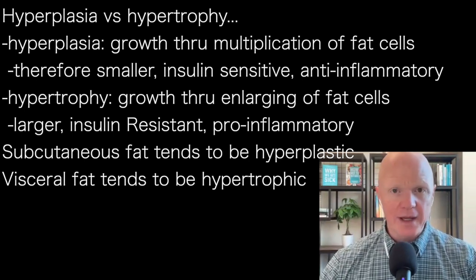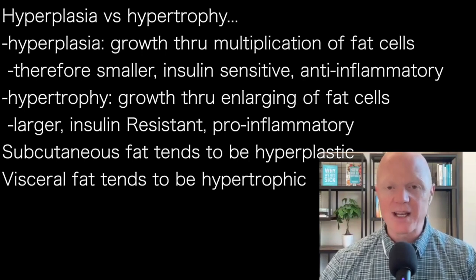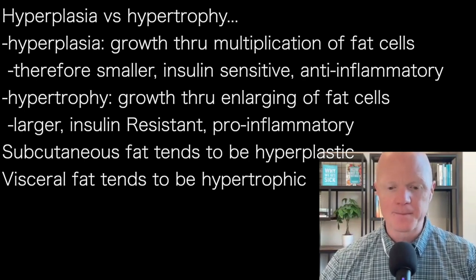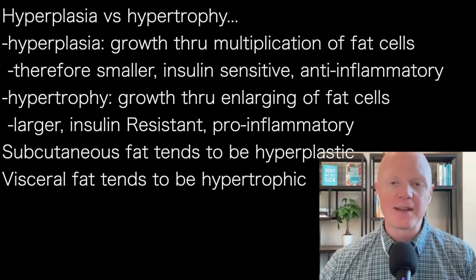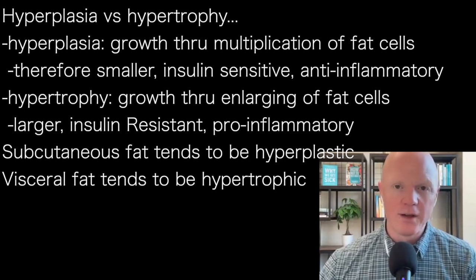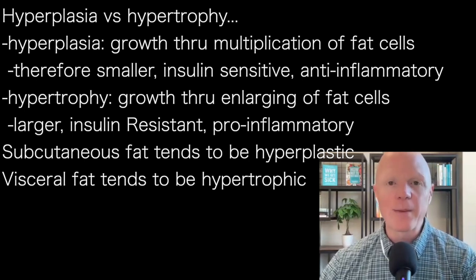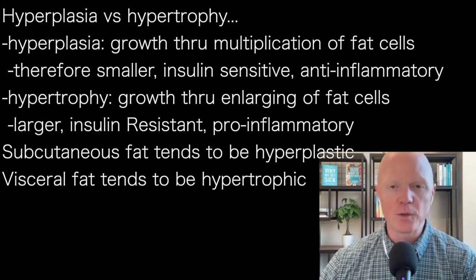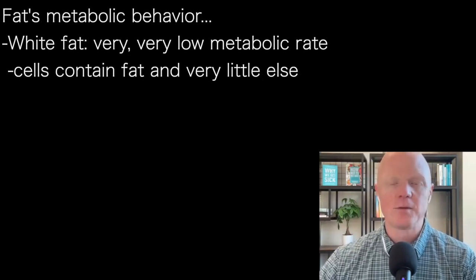Subcutaneous fat tends to be stored as hyperplastic fat — smaller, more abundant fat cells. And visceral fat tends to be stored more as hypertrophic fat cells, so fewer in number but larger in size.